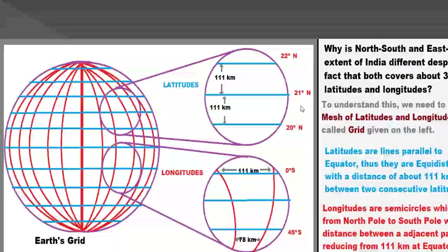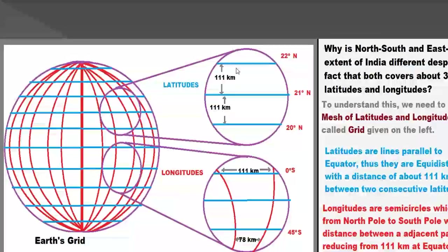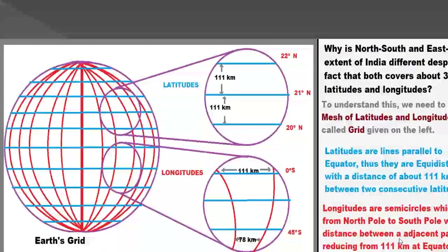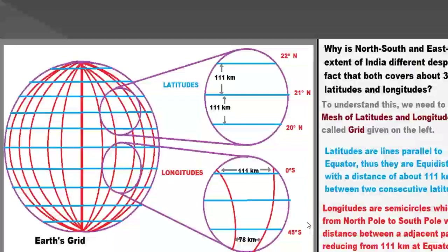For example, from longitude 20 to 21, the distance is 111 kilometers, and again from 21 to 22, the distance is about 111 kilometers. Longitudes, however, are semi-circles which run from the north pole to the south pole, and the distance between adjacent longitudes reduces from 111 kilometers at the equator to 0 kilometers at the poles.